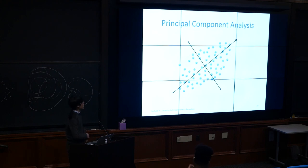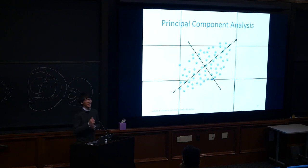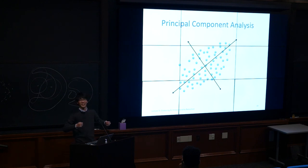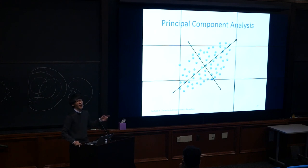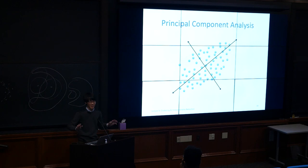Machine learning has a tendency to absorb older methods and claim them as its own — PCA is a fundamental linear algebra concept that happens to be used in ML. Instead of assigning cluster memberships, PCA describes the data in a way that maximizes understanding by finding new axes. Summarization here is via orthogonal projections that define a new feature space.